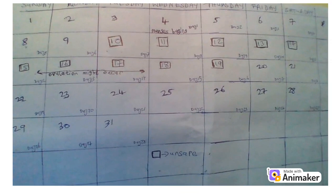As we said earlier, ovulation occurs on the 12th to 14th day of the menstrual cycle. In this example, the 12th to 14th day falls on the 15th to 17th of August.